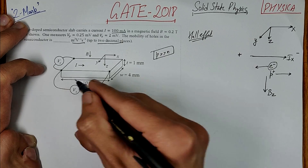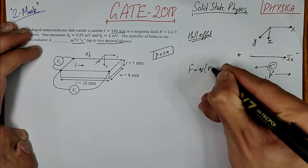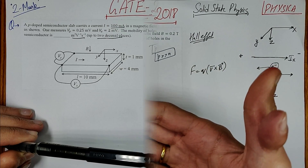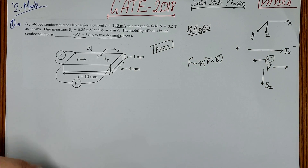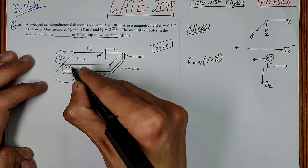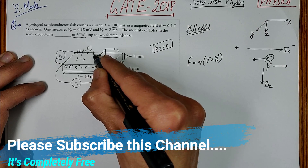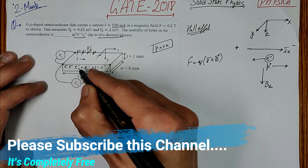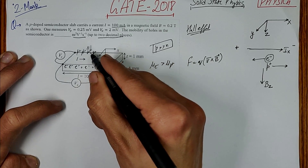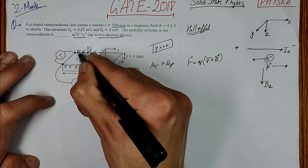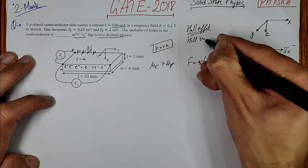The Lorentz force is F = qV × B. Electrons are moving in this direction, so electron velocity is in this direction and magnetic field is downward, so the force will be in the outward direction. All electrons accumulate on the outward side, and holes accumulate on the other side. This causes a voltage to develop, which is called the Hall voltage.